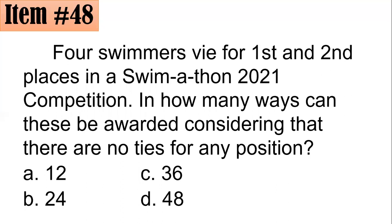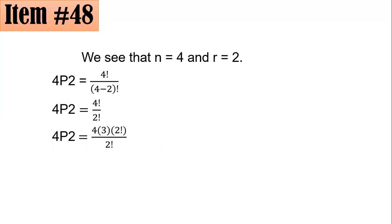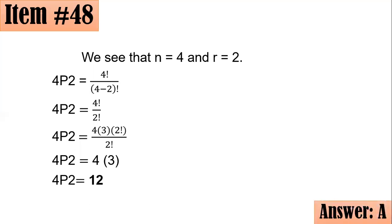For swimmers, there are two awards and order matters, so this is a permutation question. We have n equals 4 and r equals 2, so we compute 4P2 equals 4 factorial over (4 minus 2) factorial. The denominator simplifies to 2 factorial. Expressing 4 factorial as 4 times 3 times 2 factorial and canceling, you get 4 times 3, which is 12. Letter A.